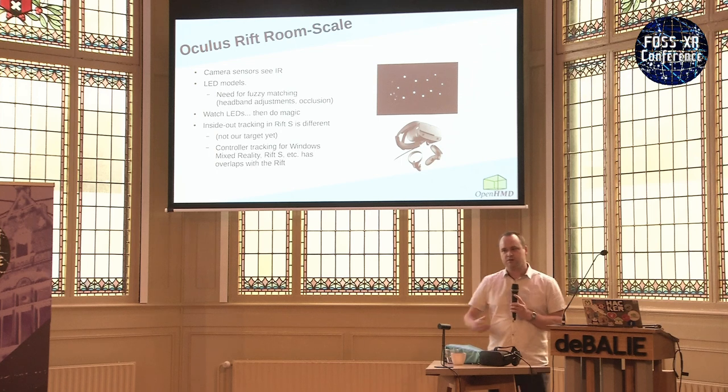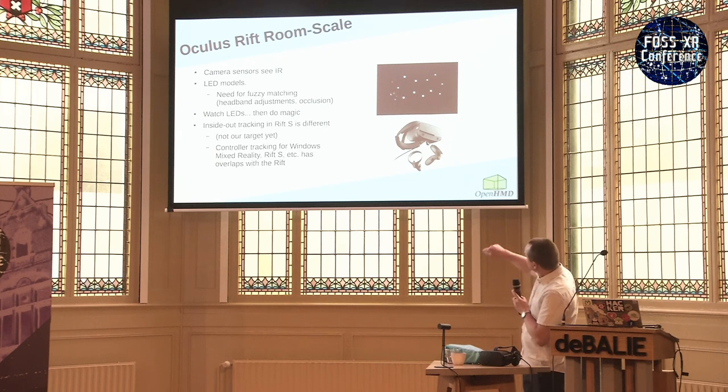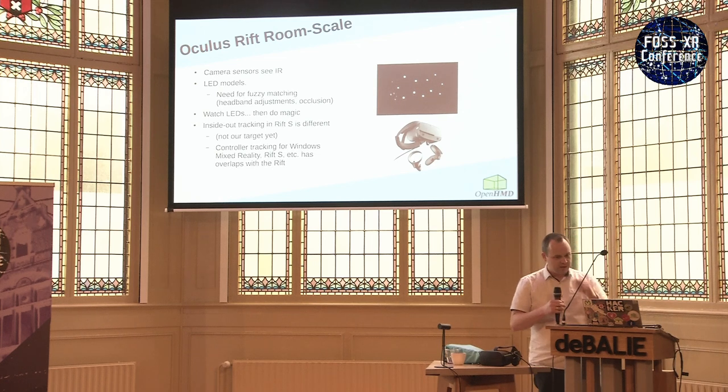This is called outside-in tracking — something outside watches the headset and does the tracking. The newer Rift S has cameras mounted on the headset looking out at the world — inside-out tracking. That changes the controller style to put a big loop of LEDs around the outside of your hand so a downward-facing headset camera can spot them. We're still trying to get the CV1 working first. But there are similarities: if we can get outside-in working, some of those pieces feed into how you can do inside-out tracking as well.